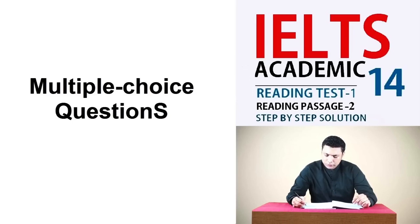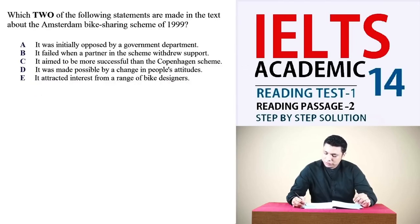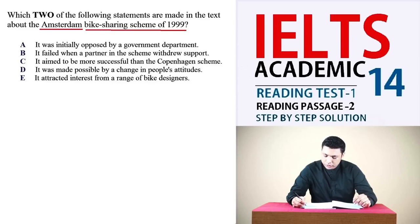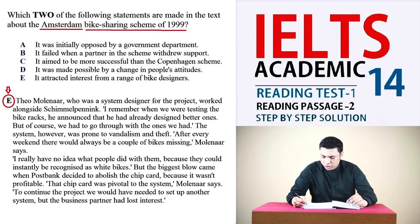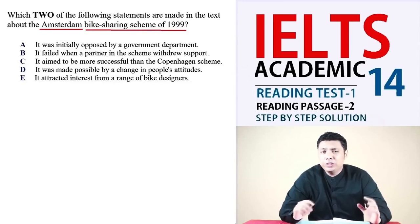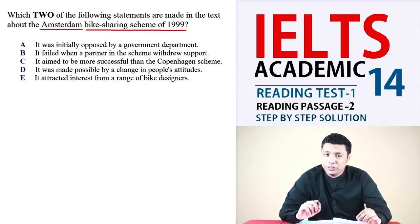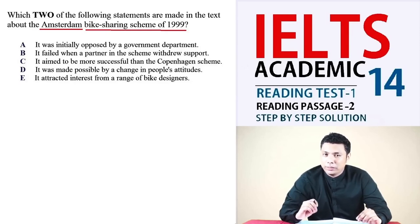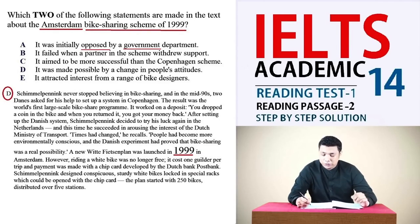Now we have multiple choice questions where we must pick two possible answers from five given options. The question is: 'Which two of the following statements are made in the text about the Amsterdam bike sharing scheme of 1999?' Keywords are 'Amsterdam bike sharing scheme of 1999.' We can locate this reference in paragraph D, continuing into paragraph E, so we need to read both paragraphs then cross out options that are unlikely to be answers.